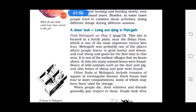A closer look at living and dying in Mehergarh. This site is located in the fertile plain near the Bolan Pass, one of the most important routes into Iran. Mehergarh was one of the places where people first learned to grow barley and wheat and rear sheep and goats. Remains of square and rectangular houses and animals' bones were found there. When people died, they were buried with goats, which were probably meant to serve as food in the next world — showing they believed in an afterlife. Several burial sites have also been found at Mehergarh.